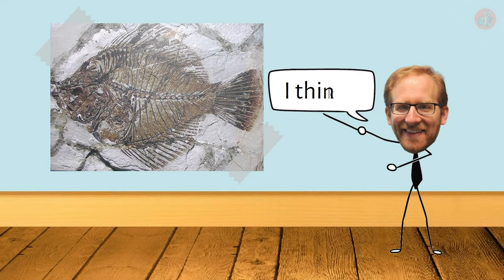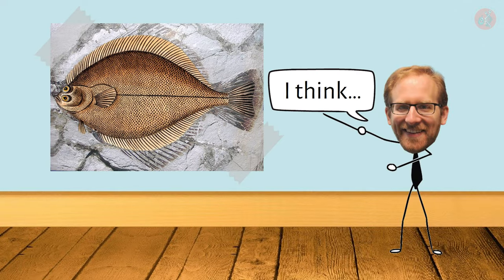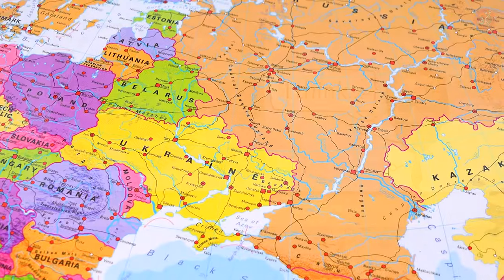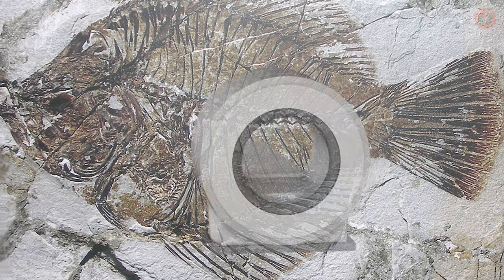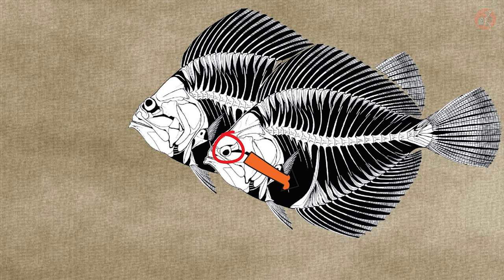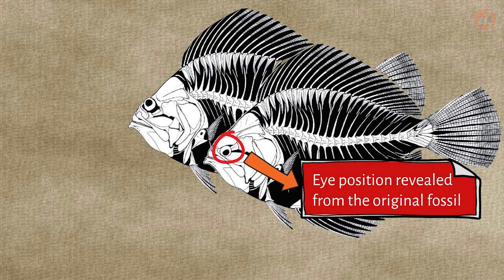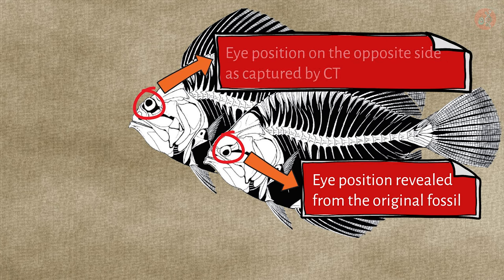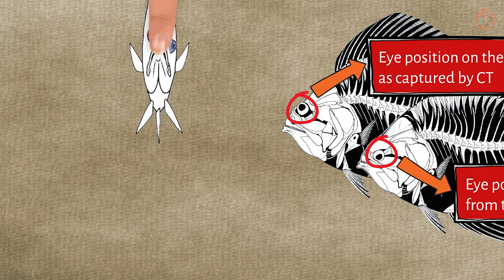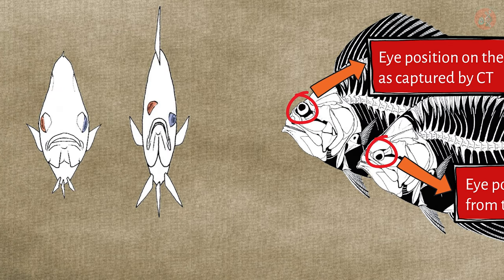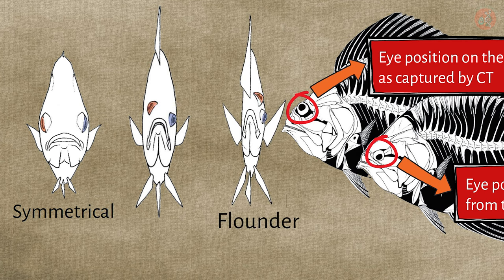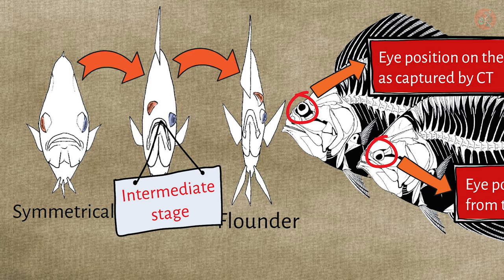He believed that these fish bore a resemblance to flounders, and after traveling across Europe examining numerous amphisteum fossils, he made a surprising find. The position of the opposite eye was on top of the head — from the front, it looked like this. This fossil represented an intermediate species in the evolution from symmetric fish to flounders.